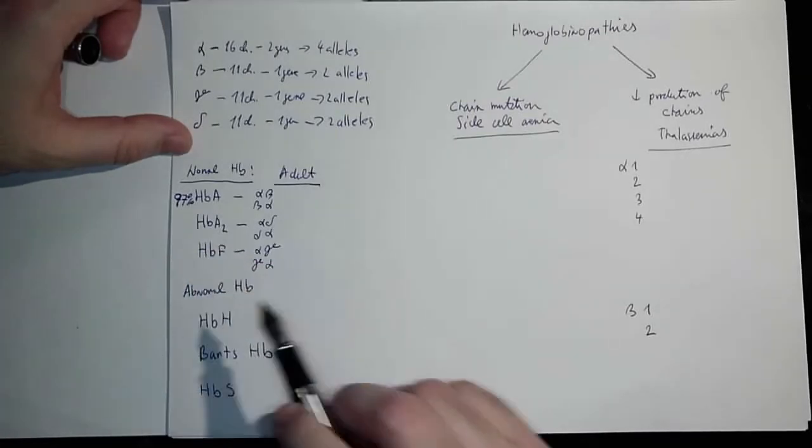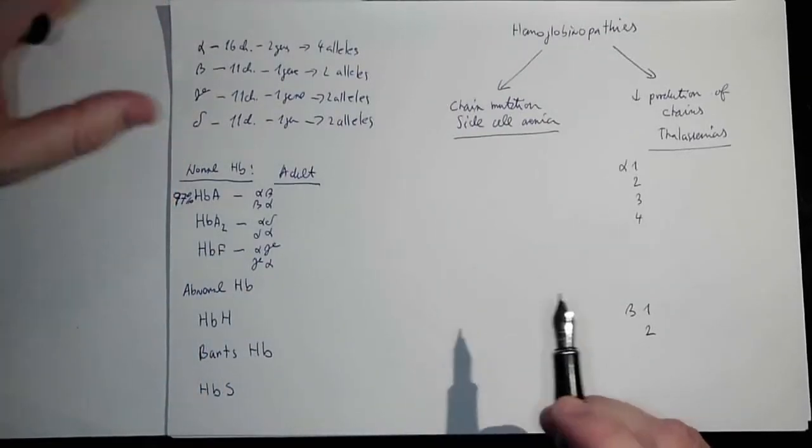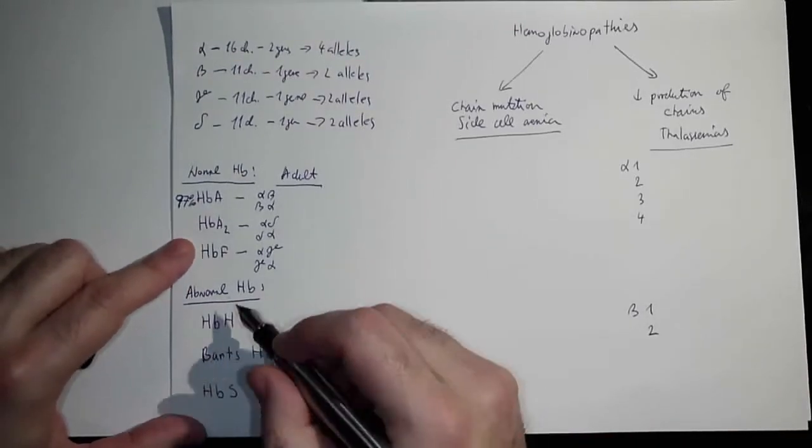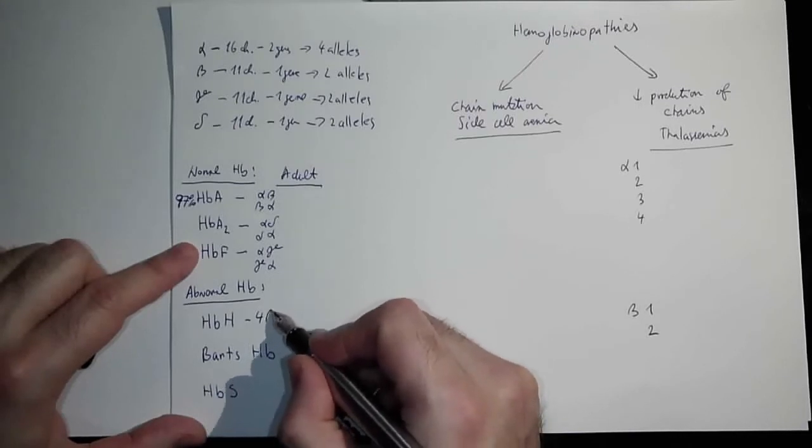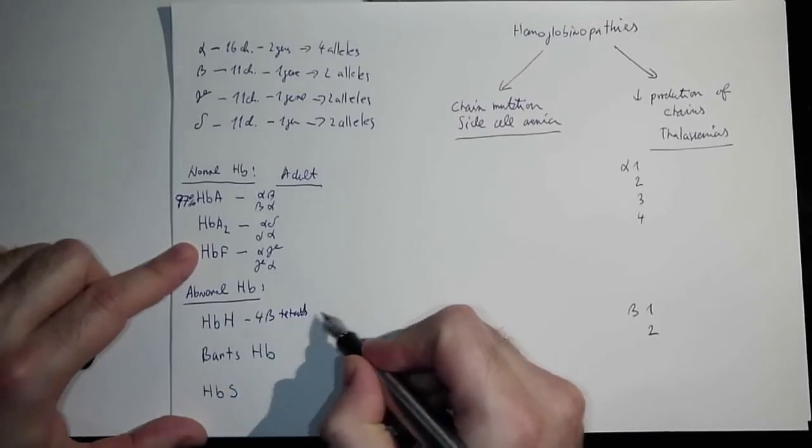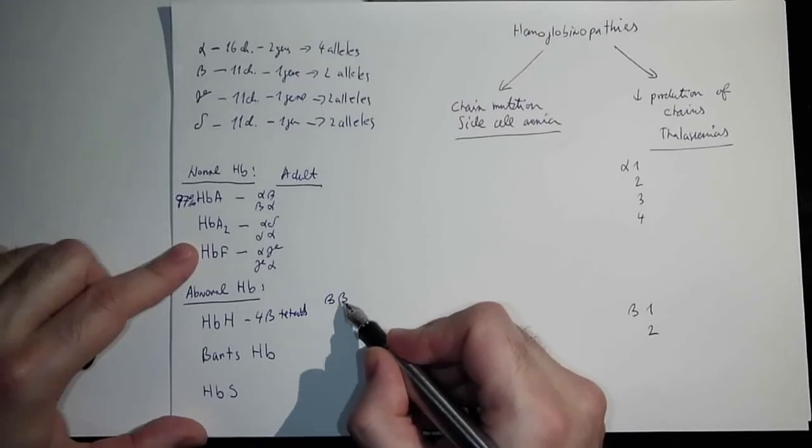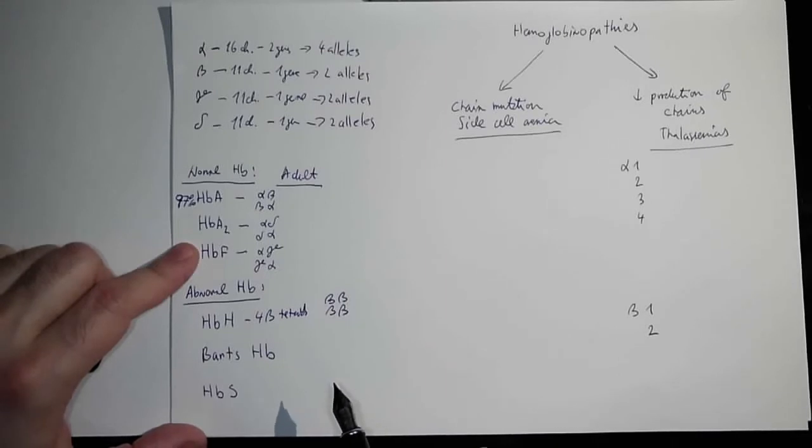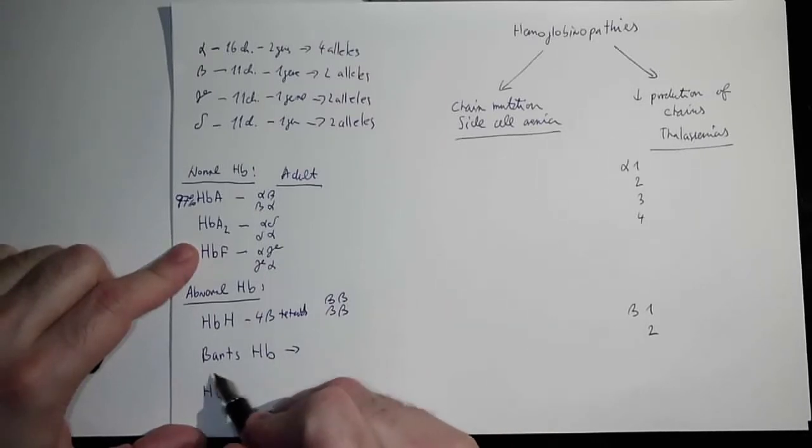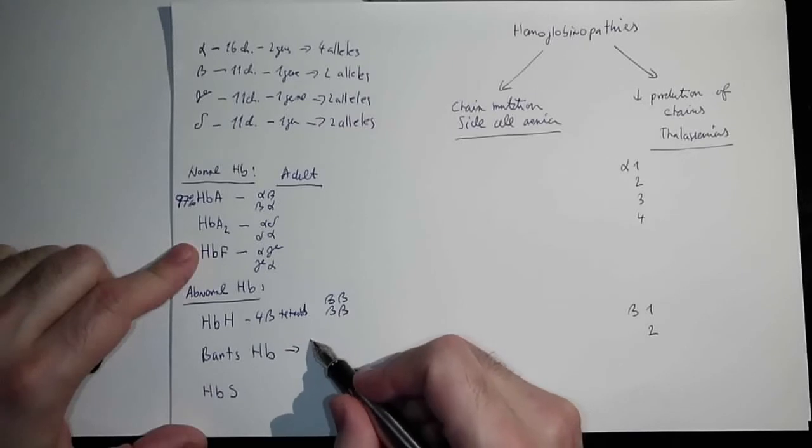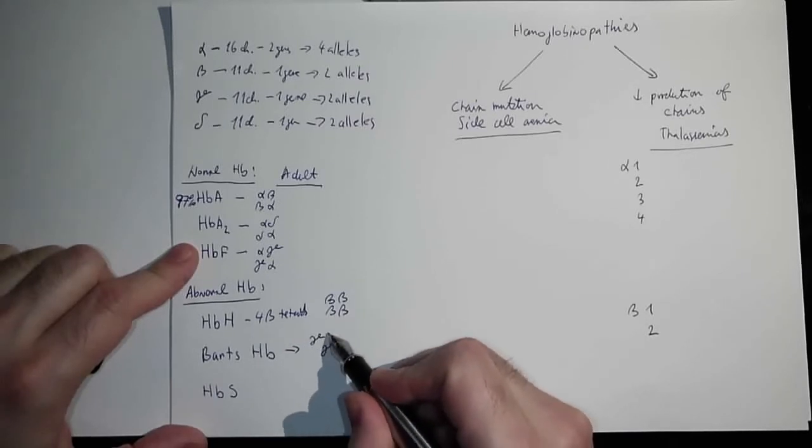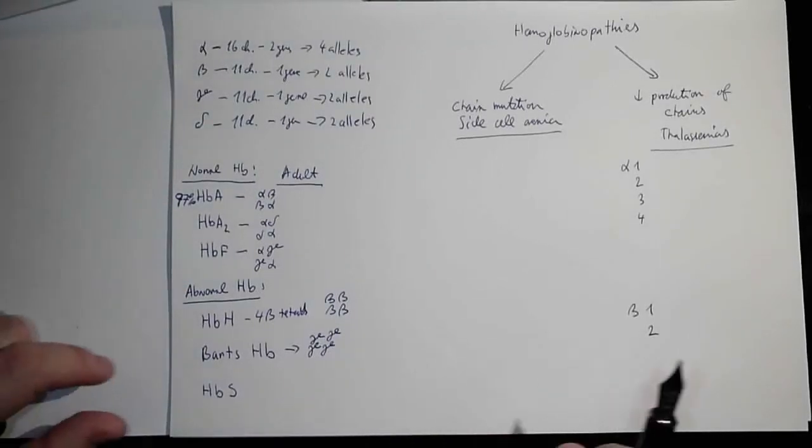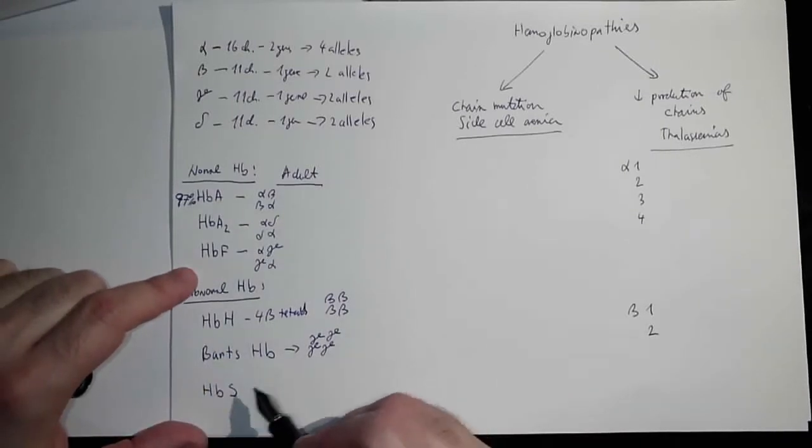There are some abnormal hemoglobins, and that is hemoglobin H, which is nothing else than four beta tetrads, so four betas together. We're going to talk about this in a second in terms of thalassemias. Also, the Bart's hemoglobin, which is a gamma-4 tetrad. These two are present in thalassemias.